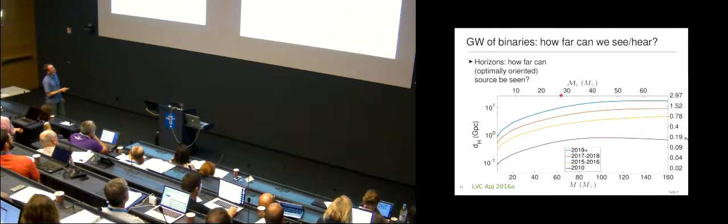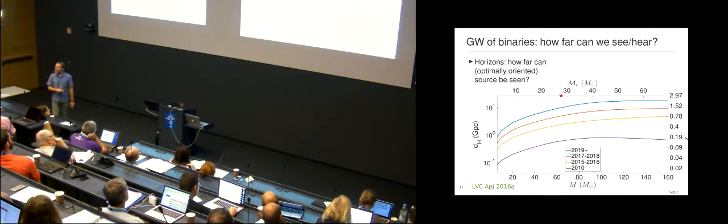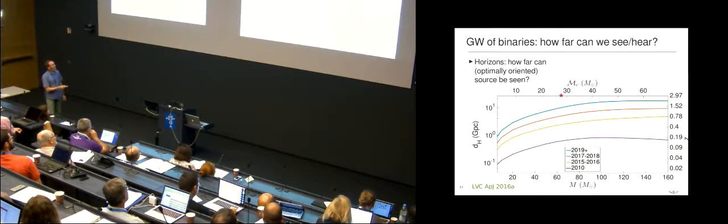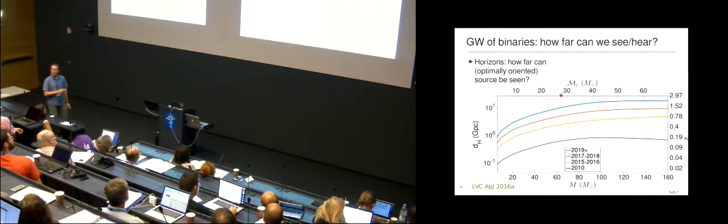And what you see here is that this is from the astrophysical interpretation paper that came out last year with the first detection. The thing is that if you look at just the blue line, the sensitivity of the detectors in sort of 2019 is such that as a function of the total mass, and for simplicity, we assume that the two objects have the same mass, but it doesn't really matter a lot,